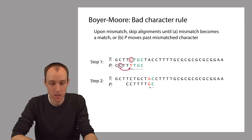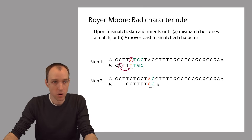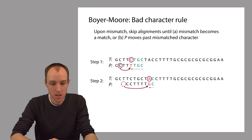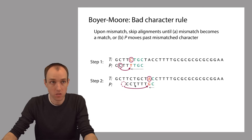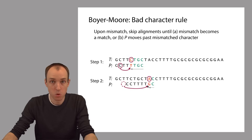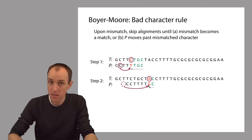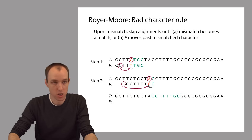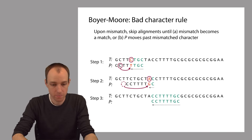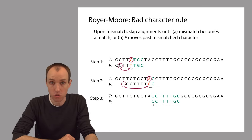So we skip those two alignments and apply the bad character rule again. In our new alignment, we start at the right-hand side, find that the C's match, and then reach a mismatch — a G in the pattern mismatches an A in the text. But in this case the mismatched character A does not occur anywhere to the left within P. That means we're going to move P all the way past the mismatched character, since there's no A to the left and we don't have to try any alignment that places part of P opposite that A.